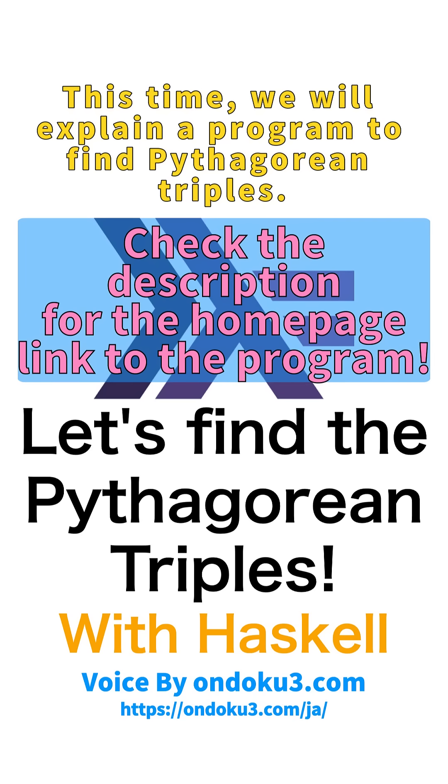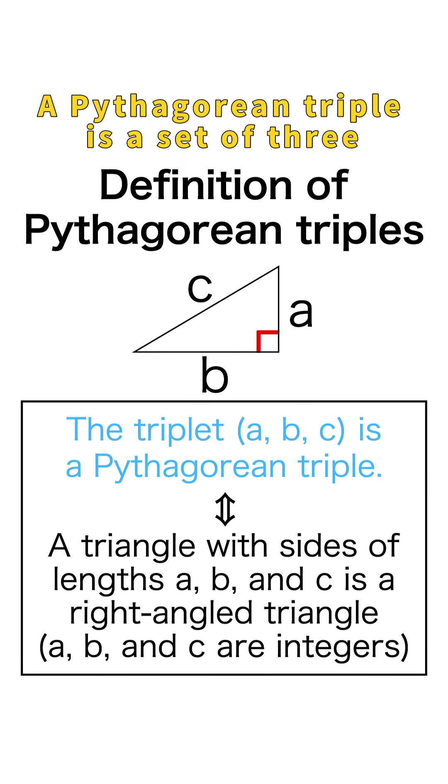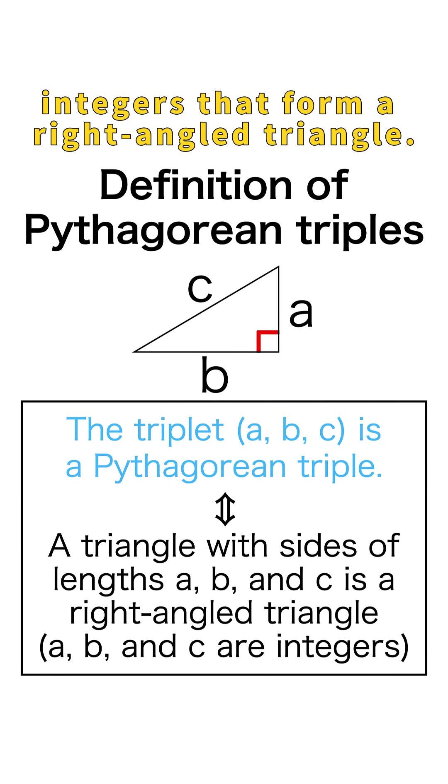This time, we will explain a program to find Pythagorean triples. A Pythagorean triple is a set of three integers that form a right-angled triangle.